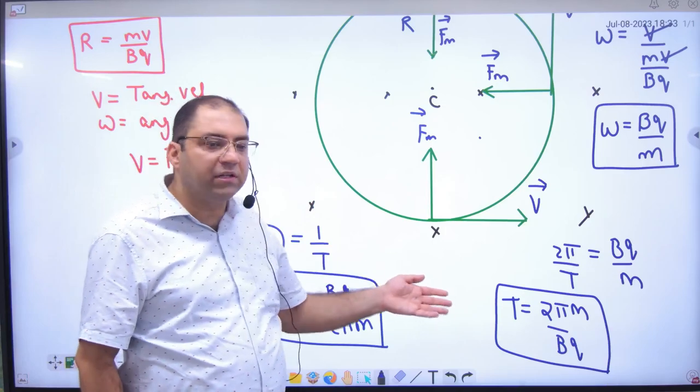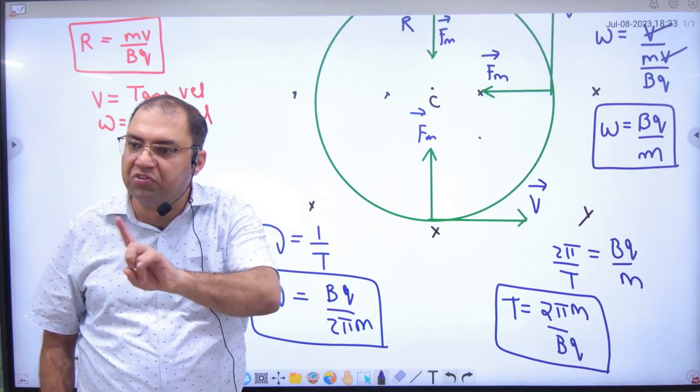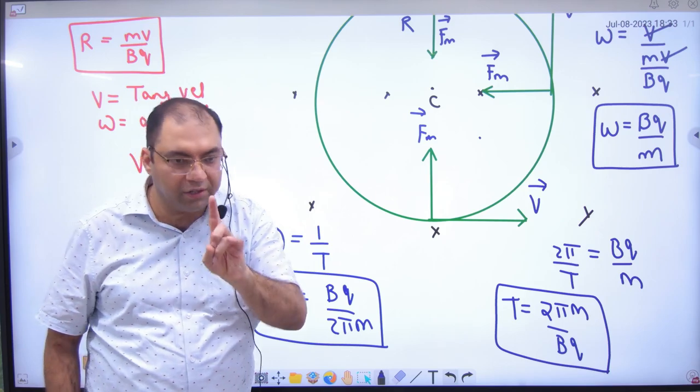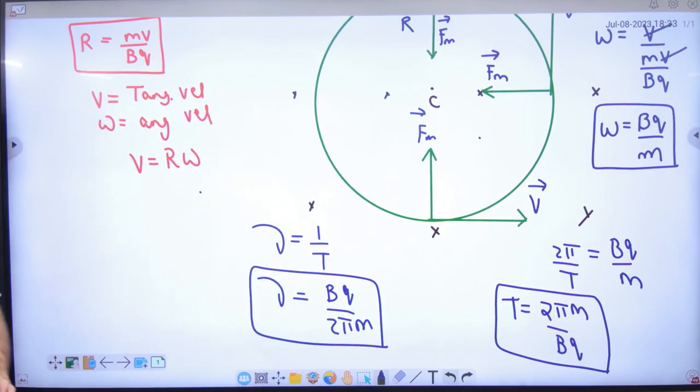Magnetic field only changes the direction of the particle. Velocity in magnitude, no change.